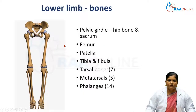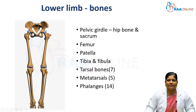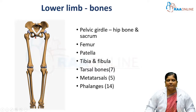Now let's discuss the bones present in the lower limb. This is the appendicular skeleton, which connects to the axial skeleton through the pelvic girdle. The pelvic girdle connects the lower limb to the trunk. The bones of the pelvic girdle are the hip bone on either side and posteriorly the sacrum. Both sides of the pelvic bone meet in the midline through the pubic symphysis.